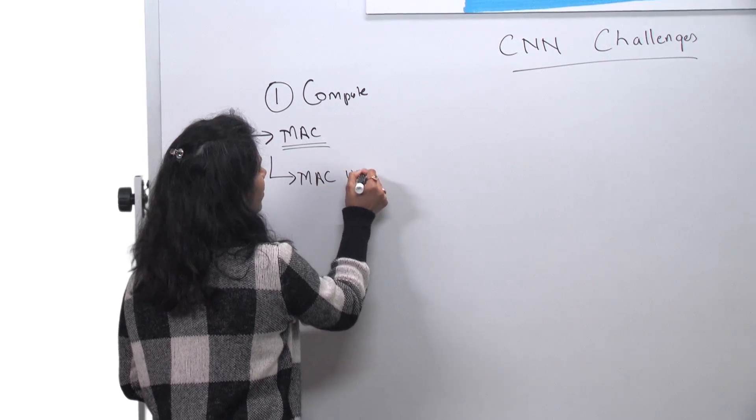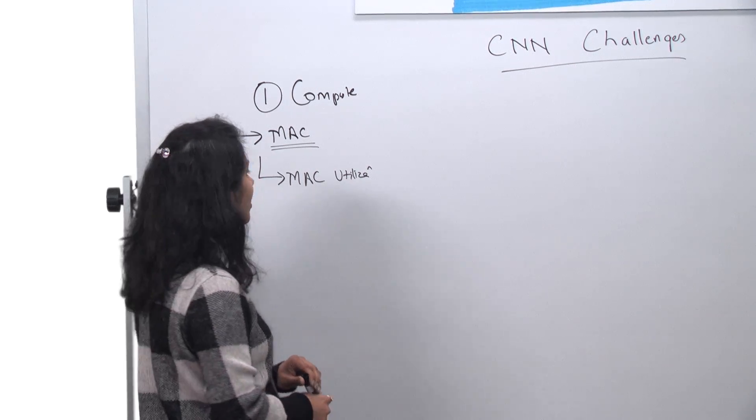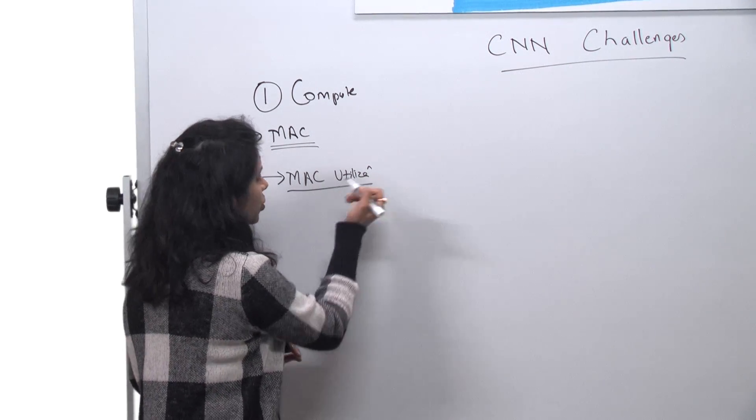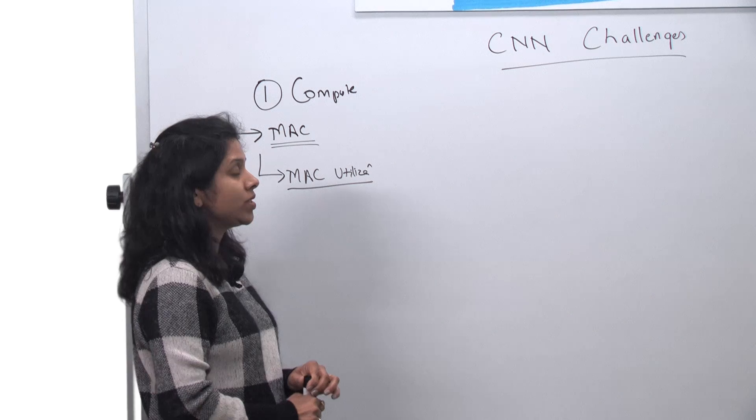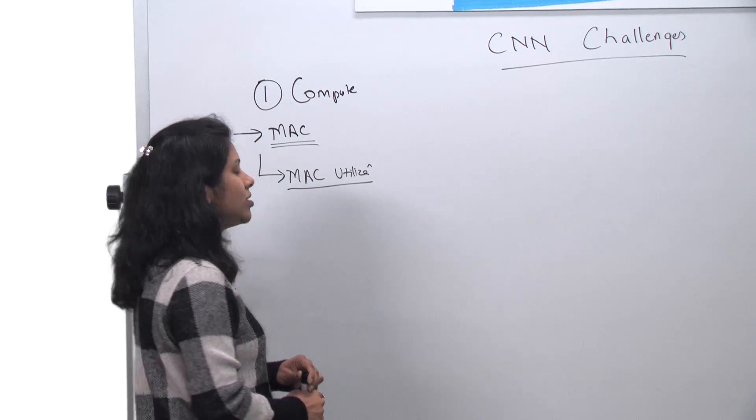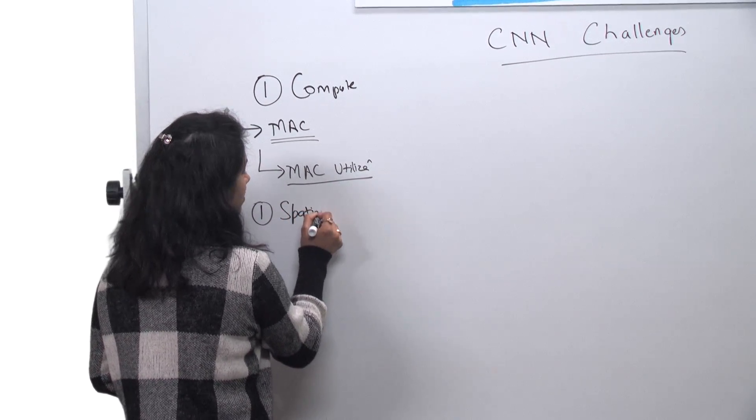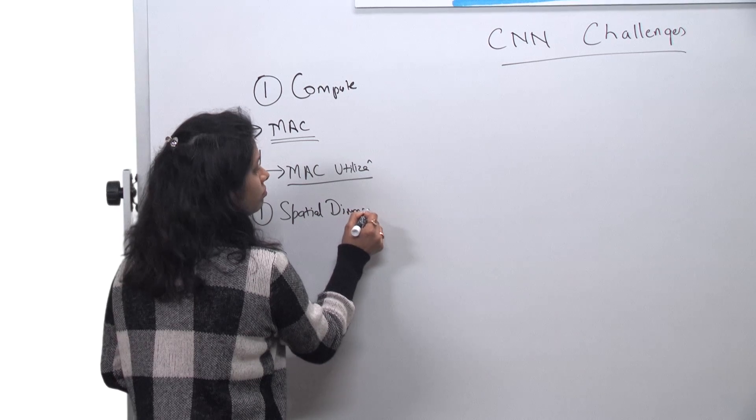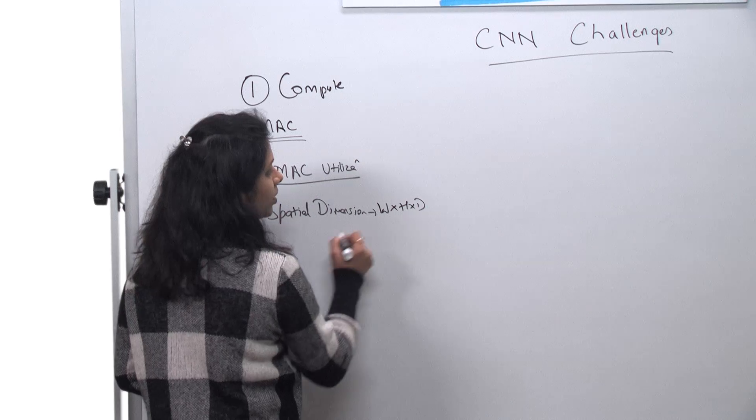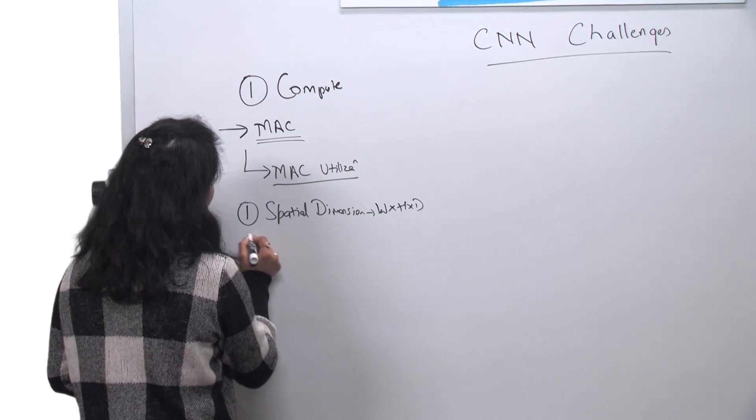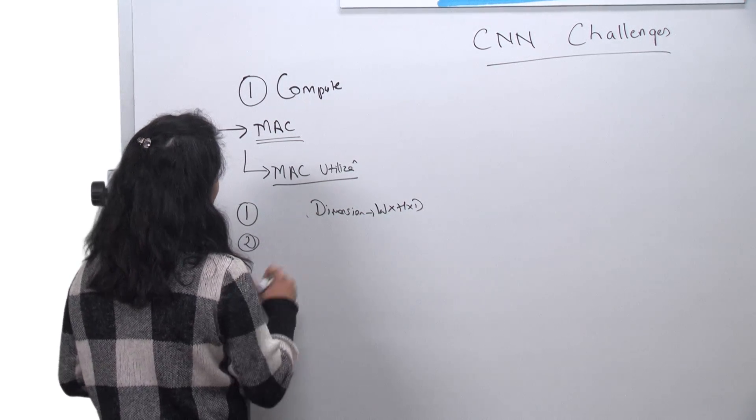So we need to make sure that we have enough registers, enough accumulators and stuff like that to make up for the MACs. Now MAC utilization is a very important terminology to understand because it depends on several factors introduced in the convolution, which we have seen in our previous sessions. So some of them were like spatial dimensions of the input channel. So we have seen it's a 3D. So we have width, we have height, we have depth. I should probably call it input dimension rather than spatial dimension to be more accurate.